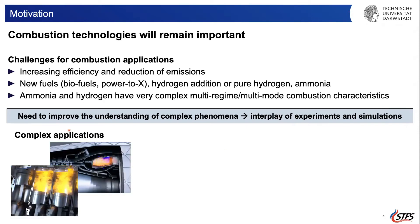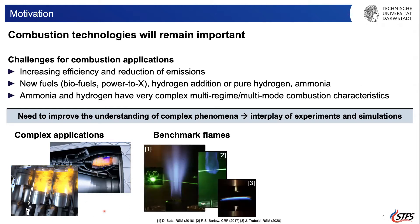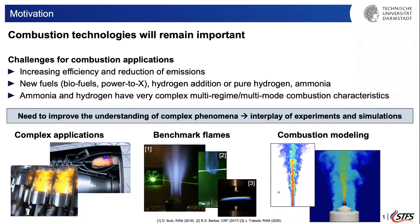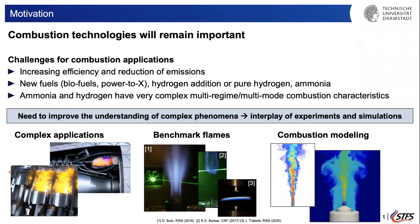How do we usually do this? We look at complex applications — here are two examples: a gas turbine combustor and an IC engine. We see complex combustion phenomena and derive benchmark flames from these where we can investigate physical and chemical processes in detail. From experiments, we go towards combustion modeling, use this data to better understand the physics, develop models, validate them against experimental data, and with validated models go back to the complex application.